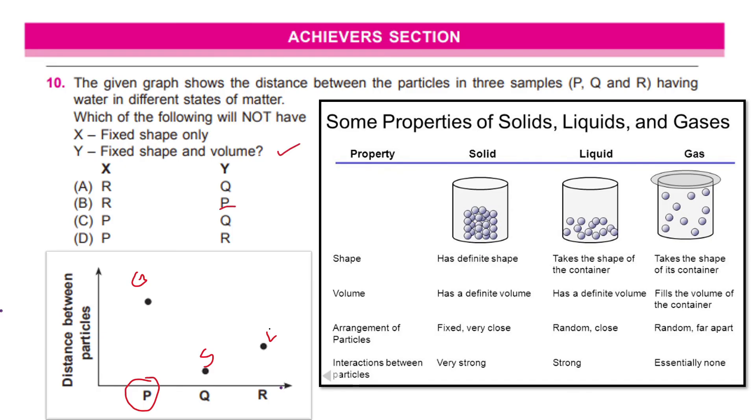So, here we have the option where gas is under the Y options and now let's look at R which is our liquid state. Now, in liquid state it has a definite volume but it takes the shape of the container that means it does not have fixed shape but it has fixed volume. So, our answer of R would be under X. So, our right answer here is option B. I hope this is clear and I hope you have understood the concepts behind the questions.